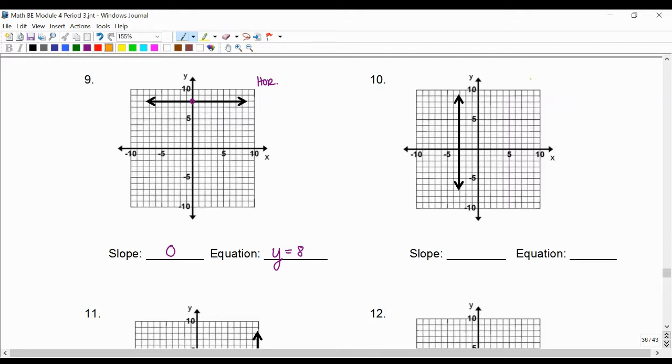Number ten, this one's a vertical. So the slope is undefined, and the equation is x equals negative three.